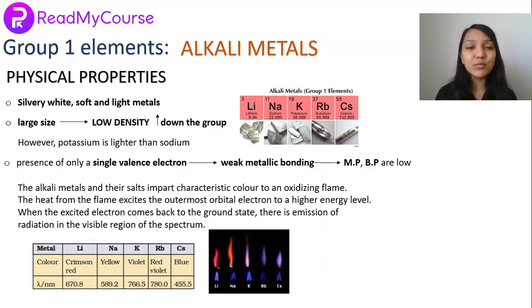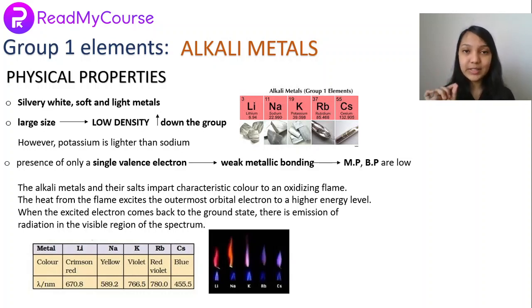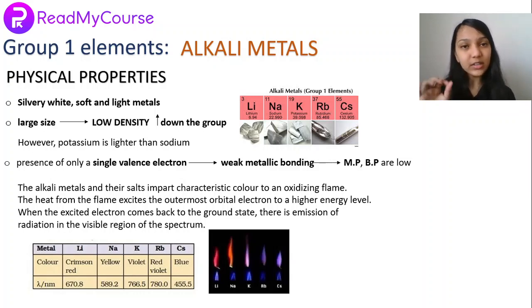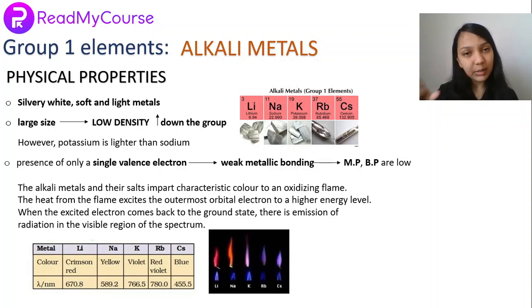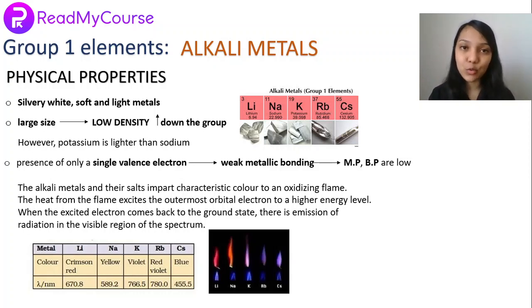Alkali metals and their salts impart characteristic colors to the flame. The heat from the flame excites the outermost electron to a higher energy level, and when it returns to normal state, it emits radiation in the visible region. Lithium gives crimson red, sodium gives yellow, potassium gives violet, rubidium gives red-violet, and cesium gives blue.